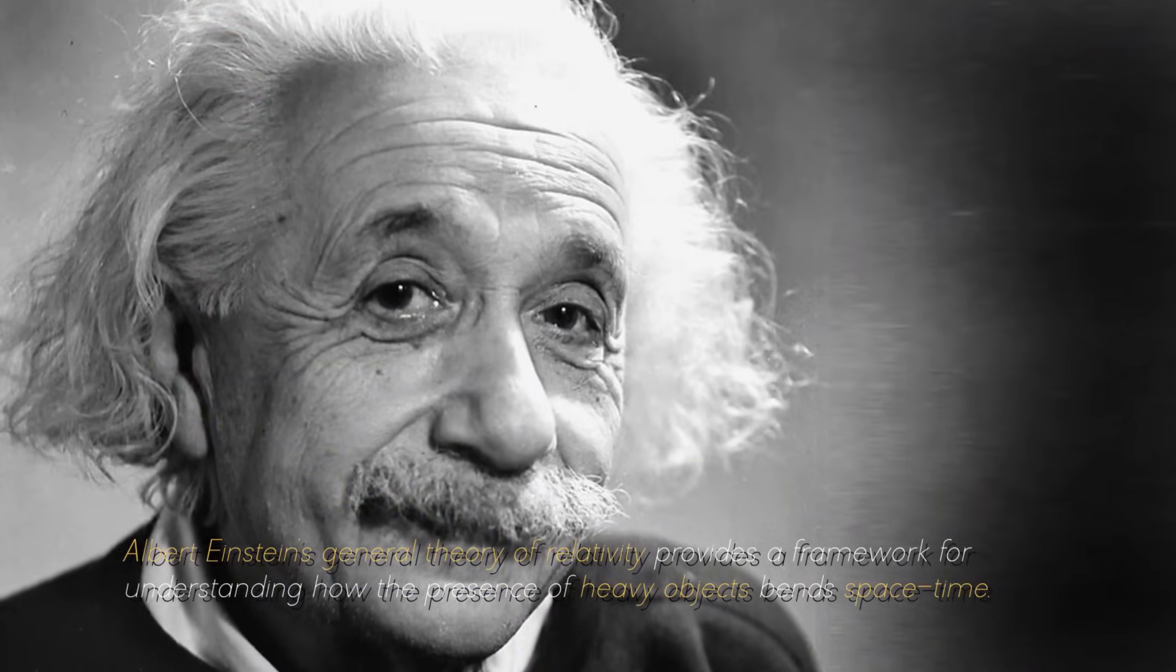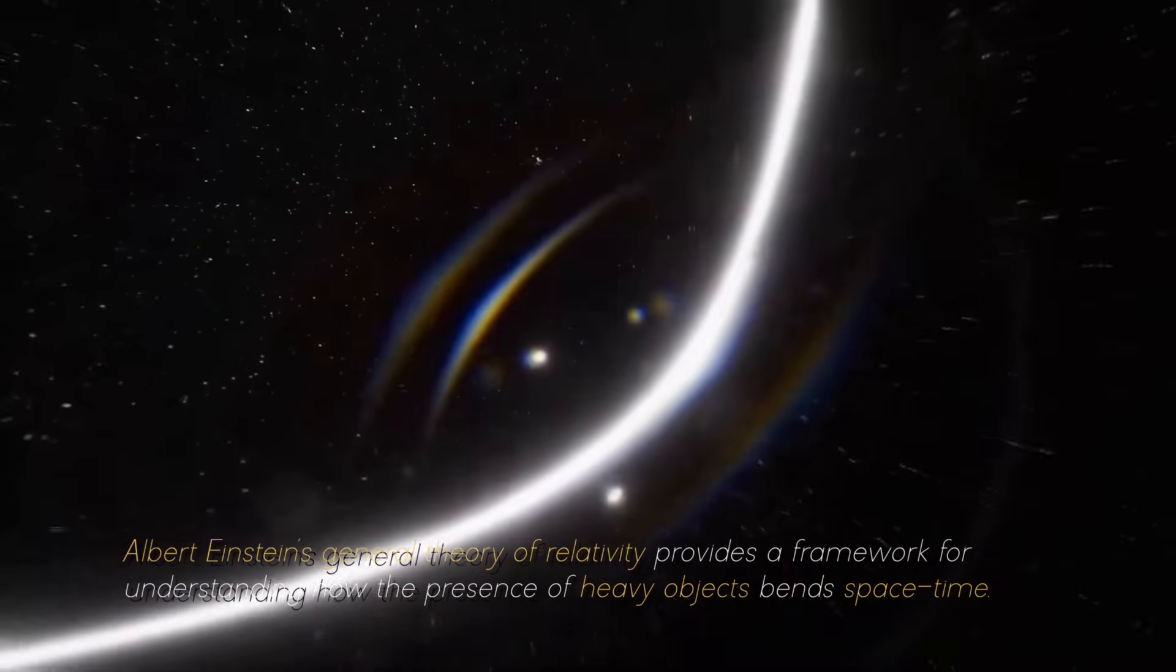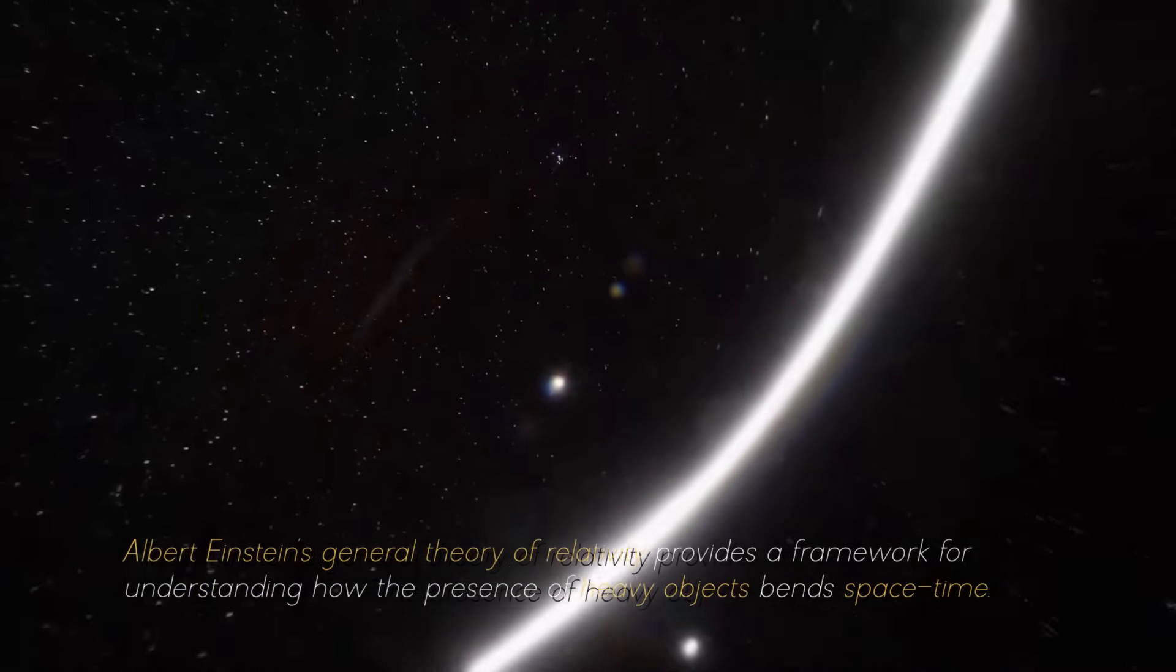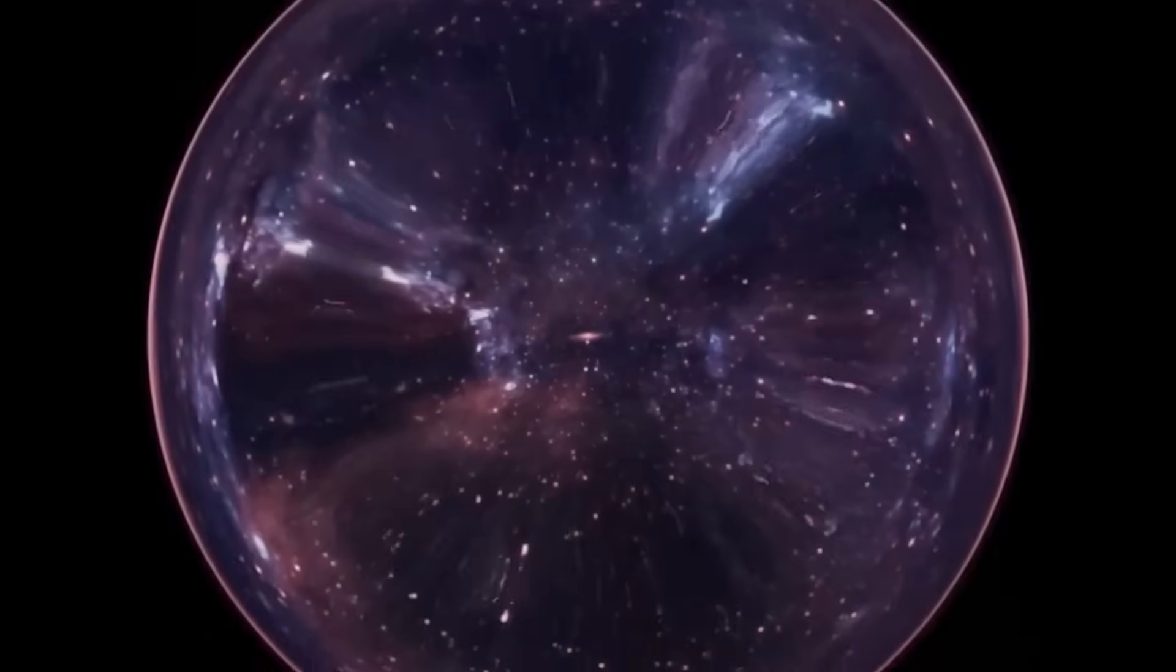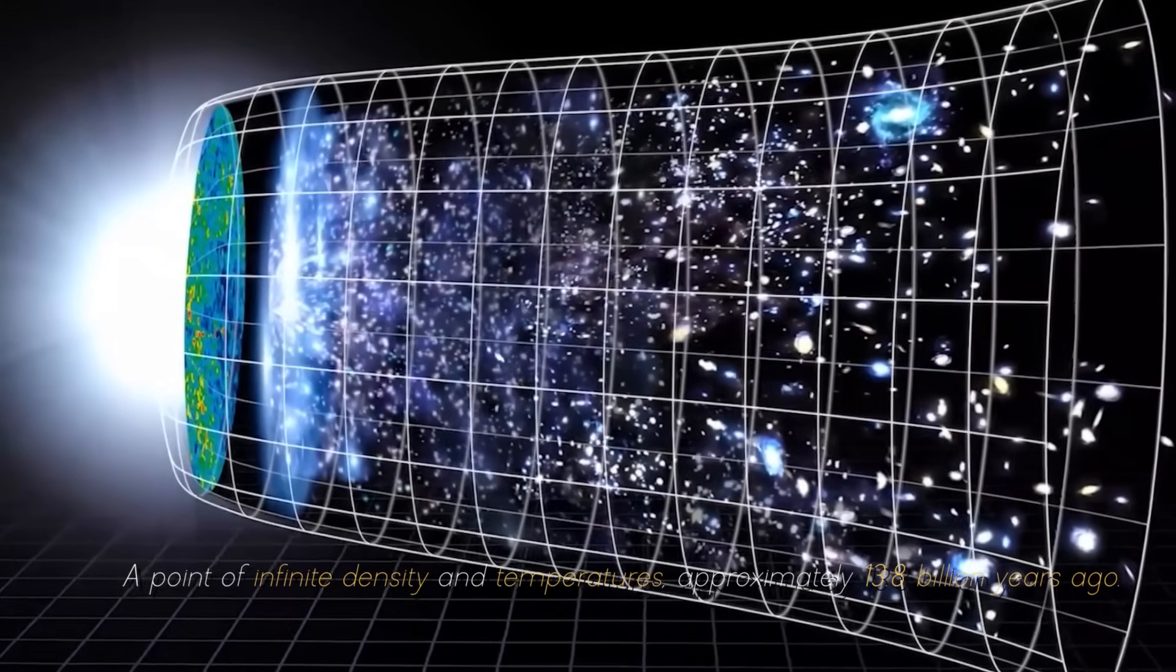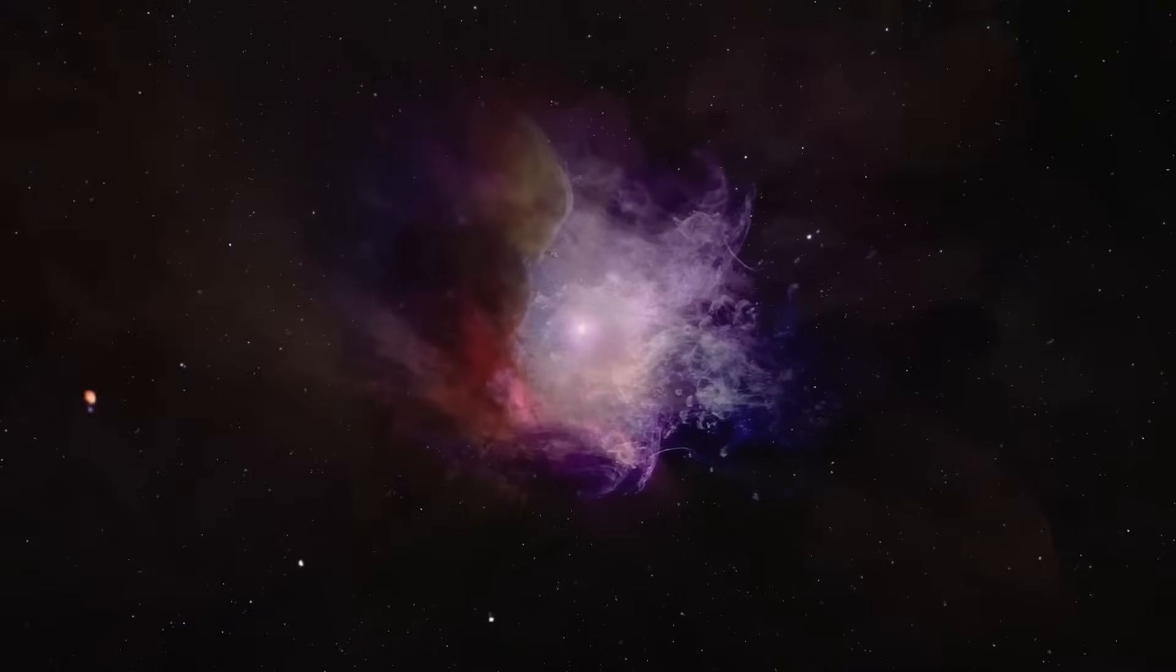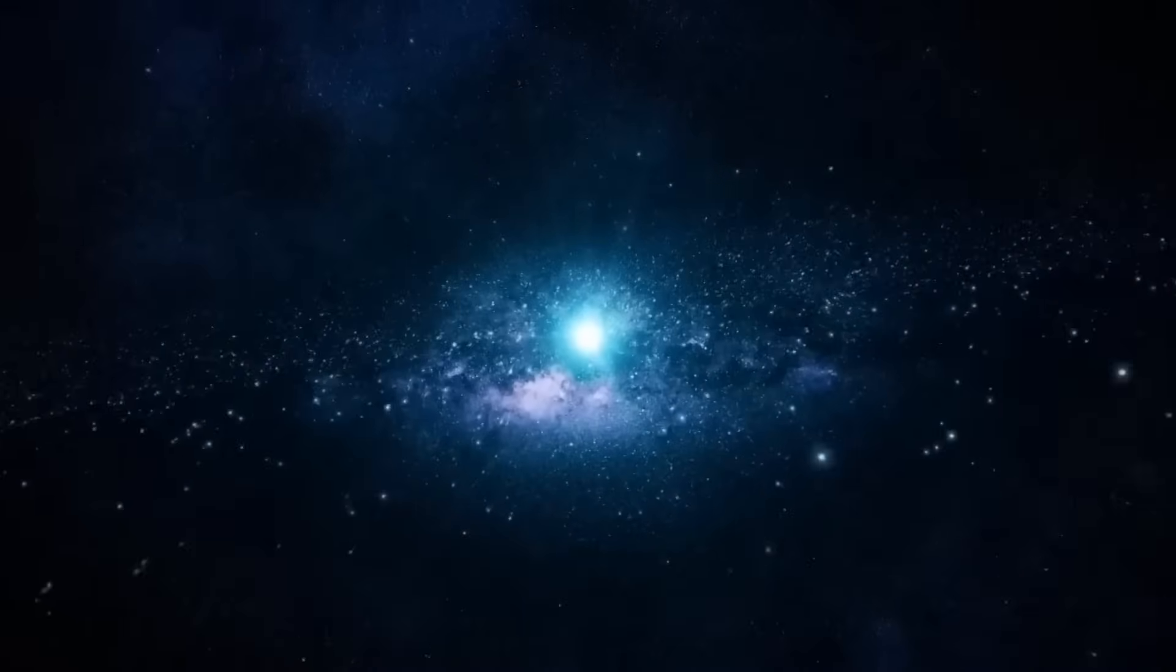Albert Einstein's general theory of relativity provides a framework for understanding how the presence of heavy objects bends space-time. According to this theory, the cosmos originated as a singularity, a point of infinite density and temperature approximately 13.8 billion years ago. At this point, the cosmos began to expand with a rapid and violent event known as the Big Bang.